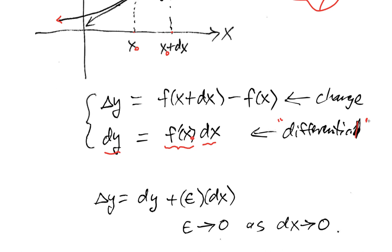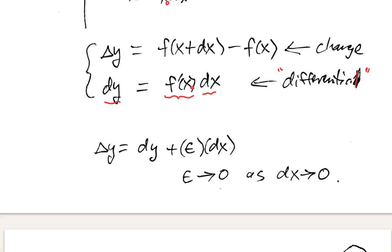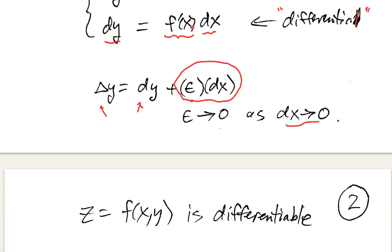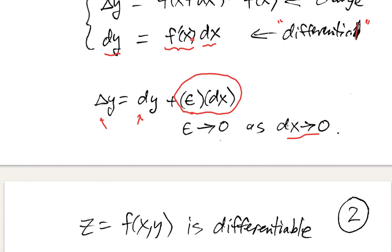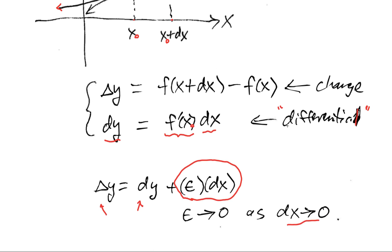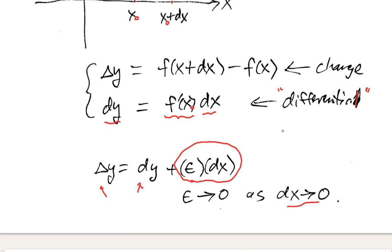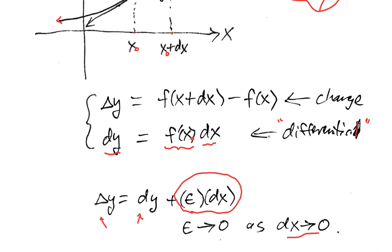To be differentiable, delta y and dy are not equal in general — they're different. The difference between those two is some error function times dx, where the error function goes to zero as dx goes to zero. That's what defines differentiability. If you go back to our original limit definition of the derivative, you'll see that this makes good sense.